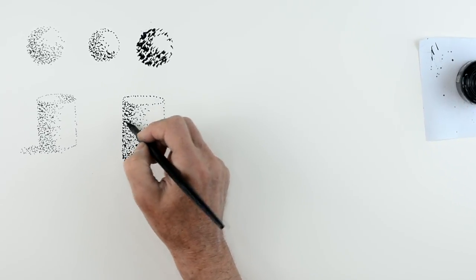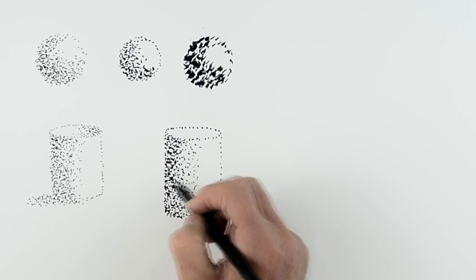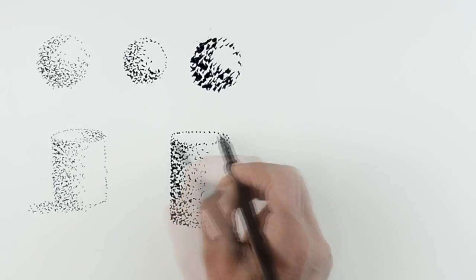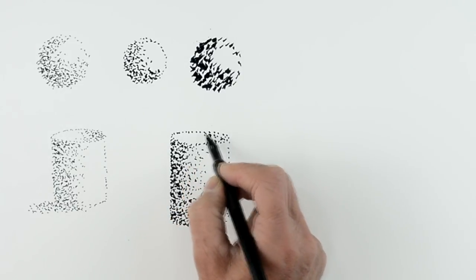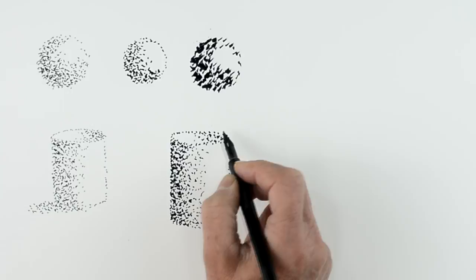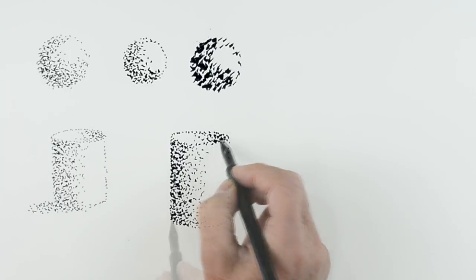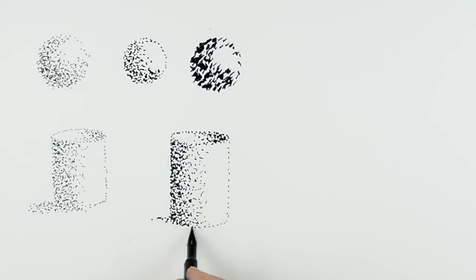We've just finished this little bit off here, just put a few more tones, dots on here to build up the tone. As you can see with the inside of the section and just a little bit at the bottom to finish off the shadow.